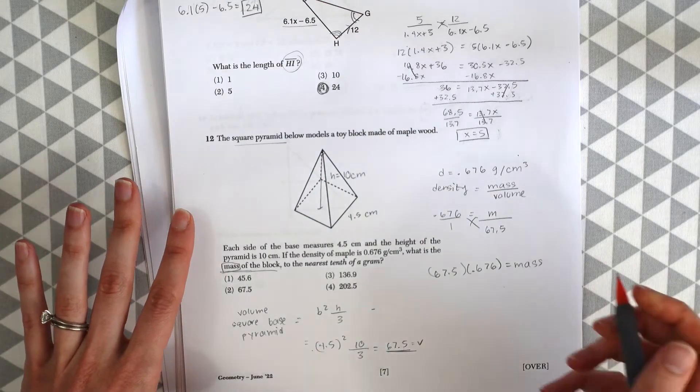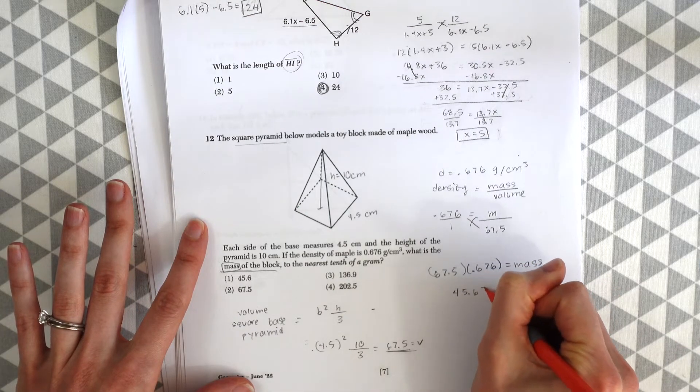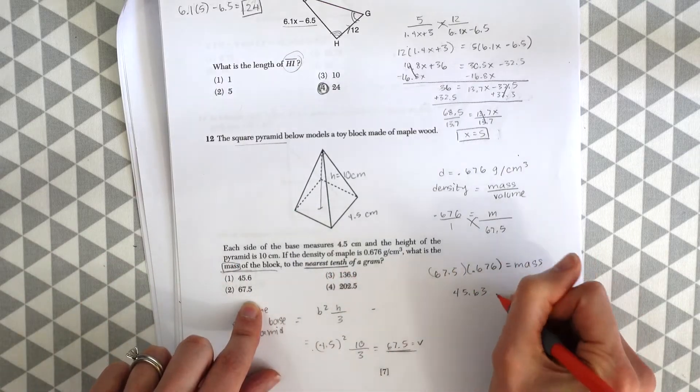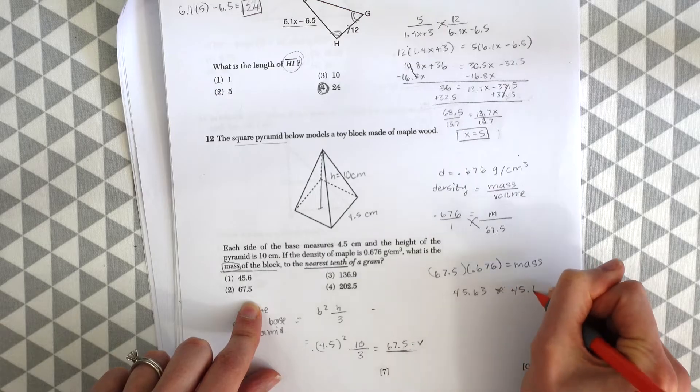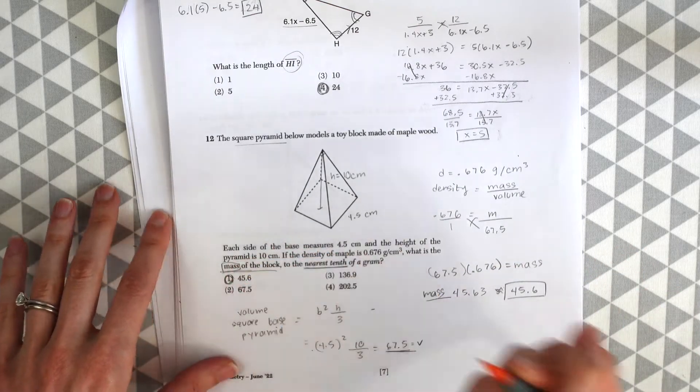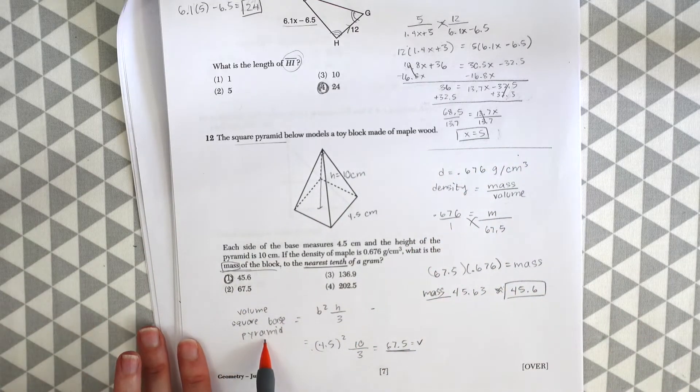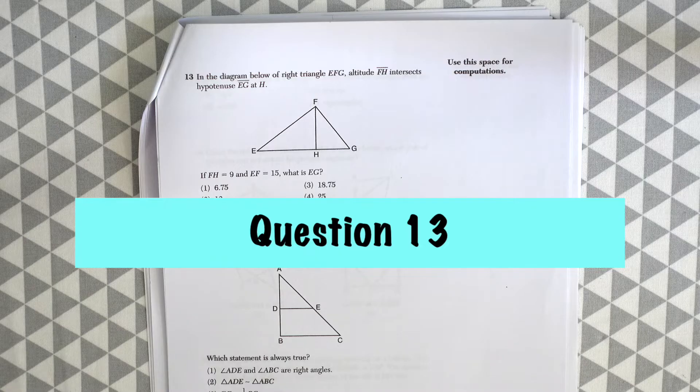If you plug that in, you'll get that the mass is equal to 45.63. But notice they want it to the nearest tenth. So this is just going to be equal to 45.6, which is choice one. So that's a lot of formulas to know, to remember. You have to remember the volume of a square base pyramid and the density formula.